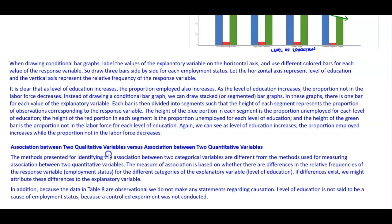Finally, regarding association between two qualitative variables versus two quantitative variables: the methods for identifying association between two categorical variables differ from methods used for measuring association between two quantitative variables. The measure of association is based on whether there are differences in the relative frequencies of the response variable — employment status — for the different categories of the explanatory variable, which is the level of education. If differences exist, we might attribute them to the explanatory variable. Because the data in this table are observational, we do not make any statements regarding causation — the level of education is not said to cause employment status because a controlled experiment was not conducted.